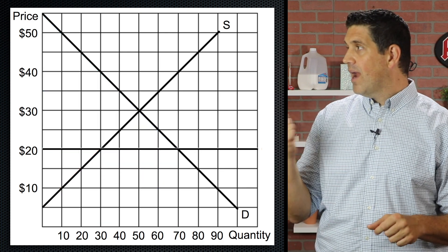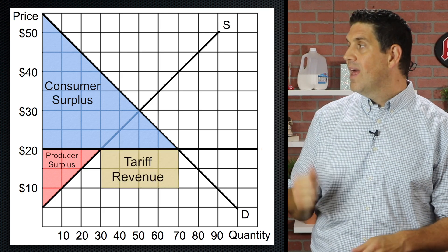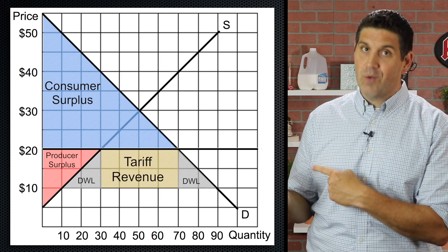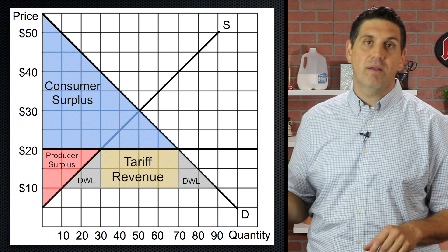So to put it all together after the tariff, we have consumer surplus, producer surplus, tariff revenue, and these two triangles, deadweight loss. It's loss, consumer or producer surplus that doesn't exist because of this policy.